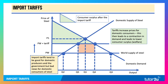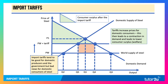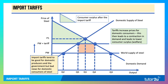Consumer surplus is also affected. Tariffs increase prices for domestic consumers, and this leads to a fall in demand and a lower level of consumer surplus or economic welfare. The new level of consumer surplus is shown in green there, and again we would label this in the exam.